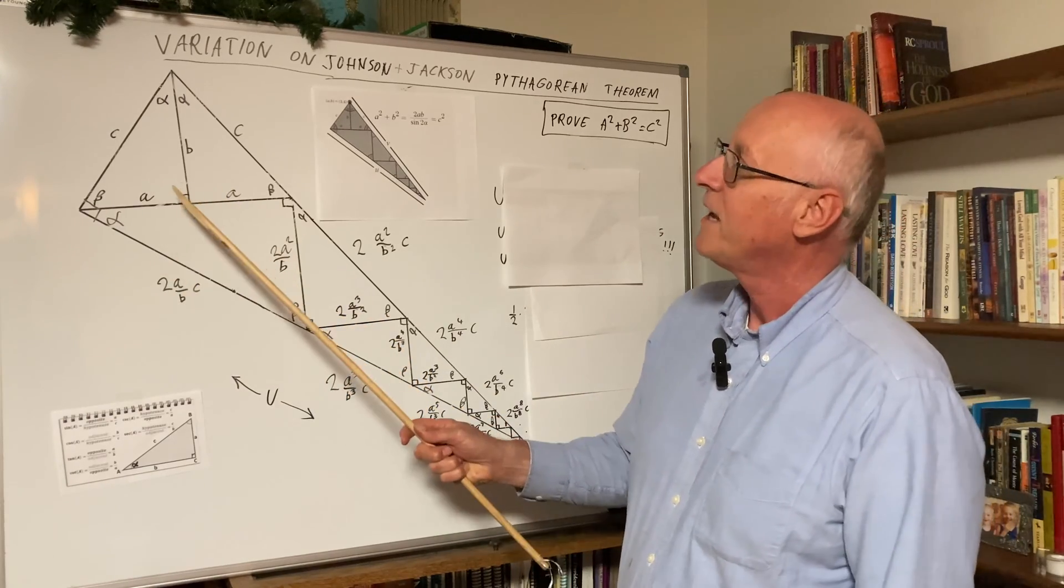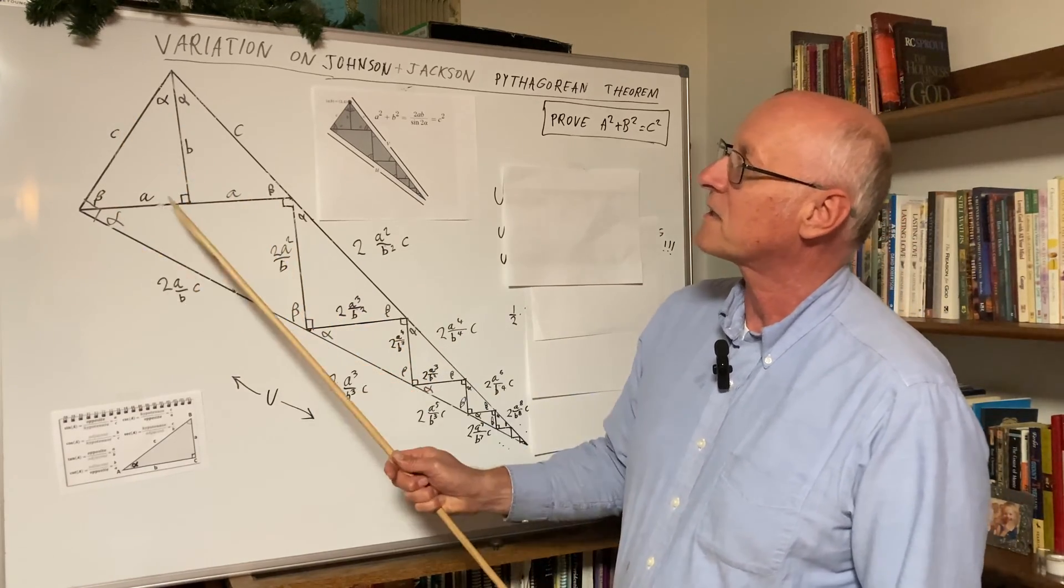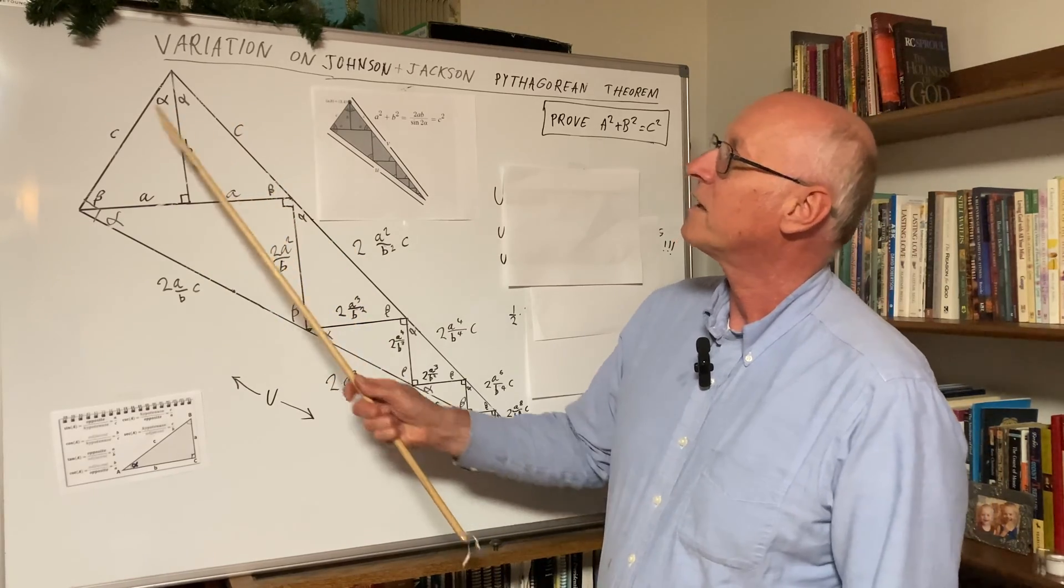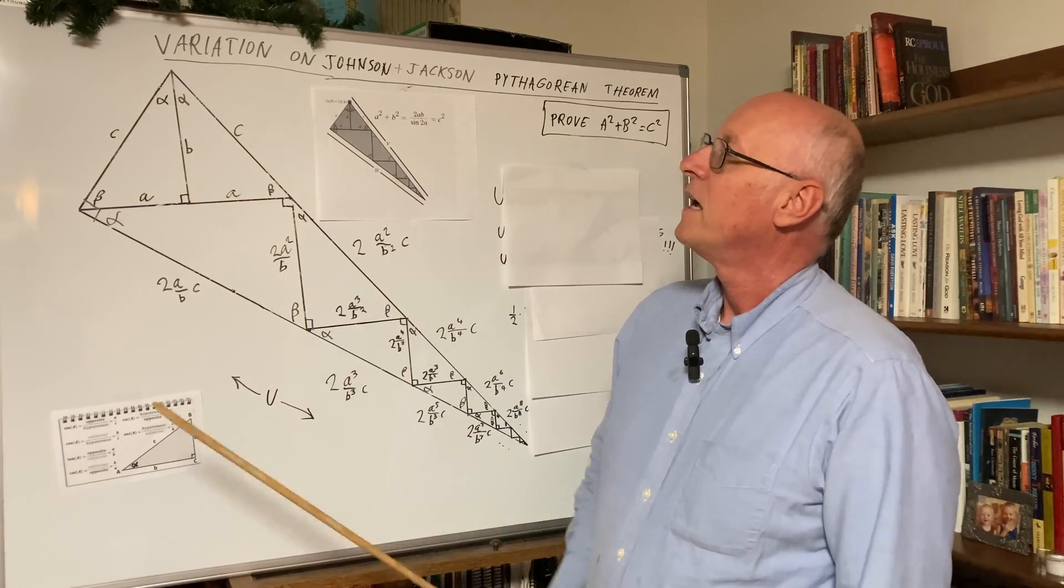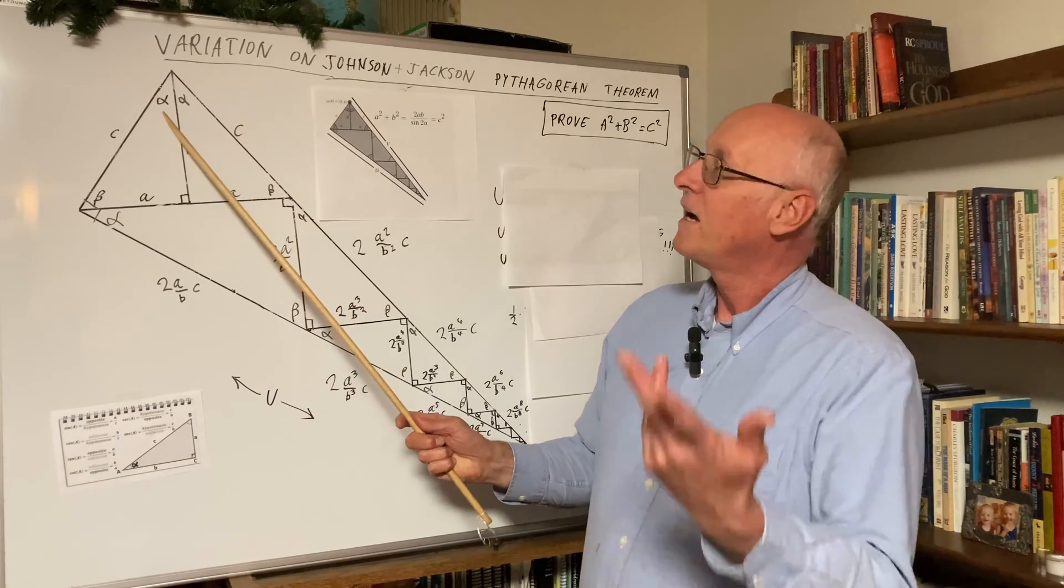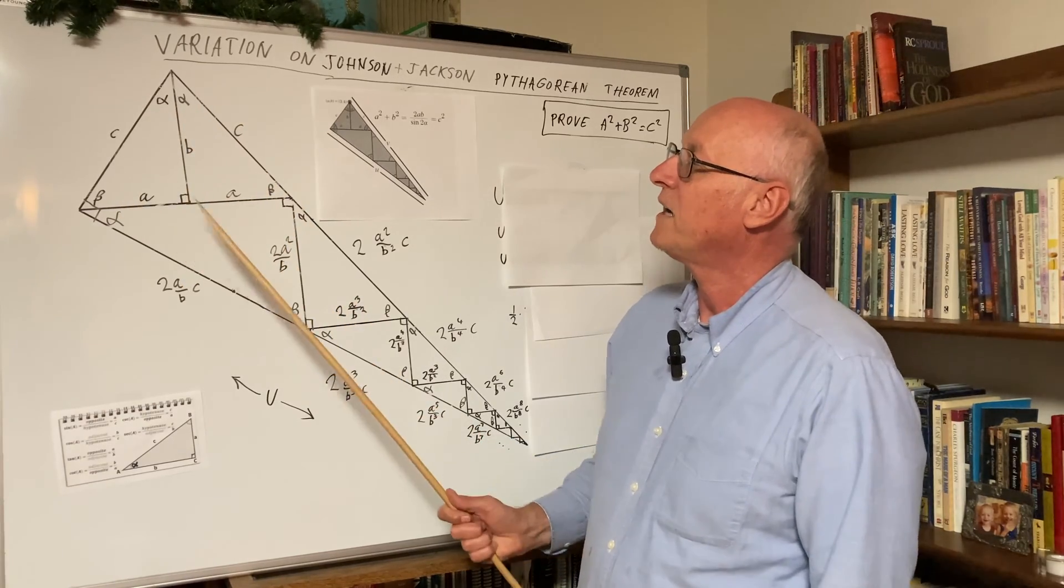So you have a right triangle ABC. This is the short, the long, and the hypotenuse. And so we have alpha and beta and 90 degrees.